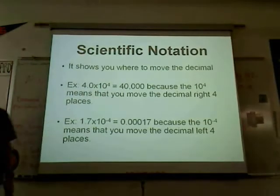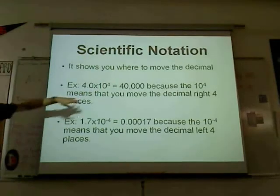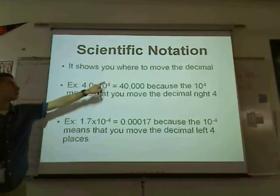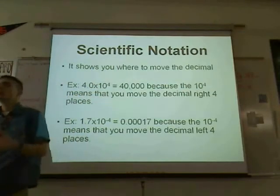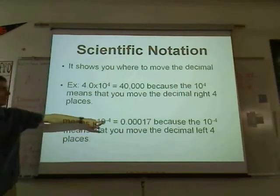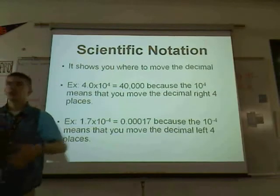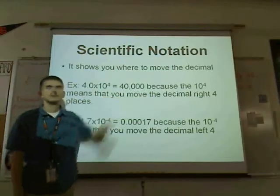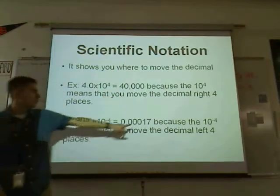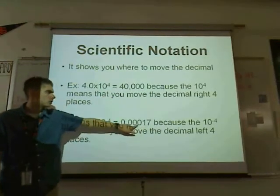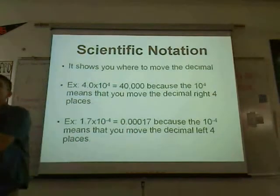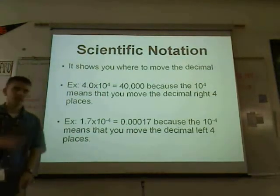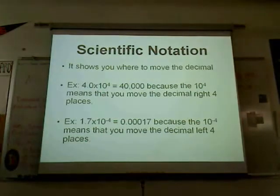If the exponent is positive 4, that means you're going to move the decimal to the right four places — a positive number means you're bigger than 1. If it's a negative number, it means you're smaller than 1. So your decimal was right here and you move it 1, 2, 3, 4. I'm going kind of quick through this because I'm assuming for most of you this is review. If you still need help, come see me and we can work on it.